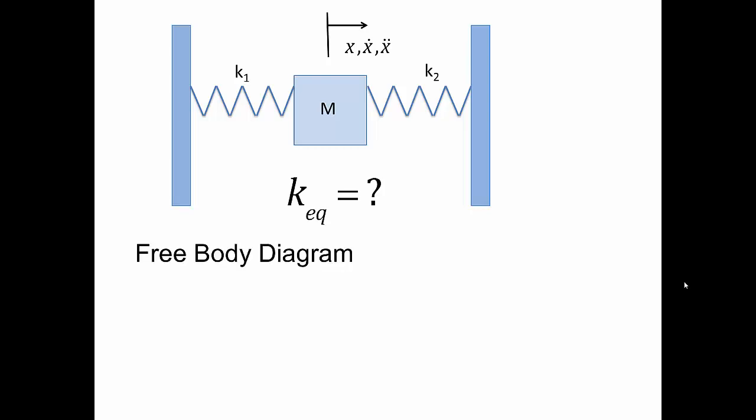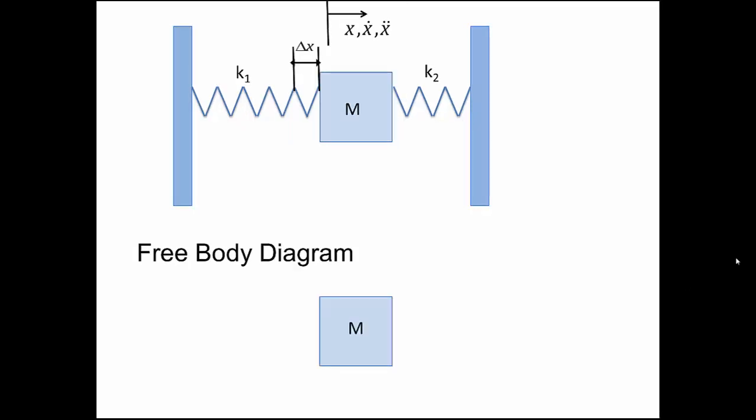We'll do a free body diagram to analyze it. If we consider the mass moves a delta x to the right from the equilibrium position, then the spring on the left will be elongated and has a tendency to pull the mass back to the left.